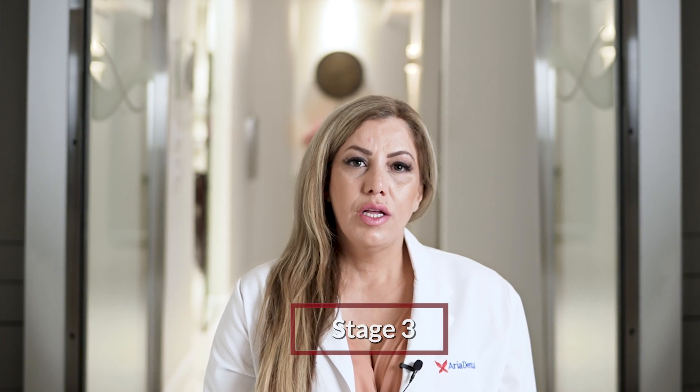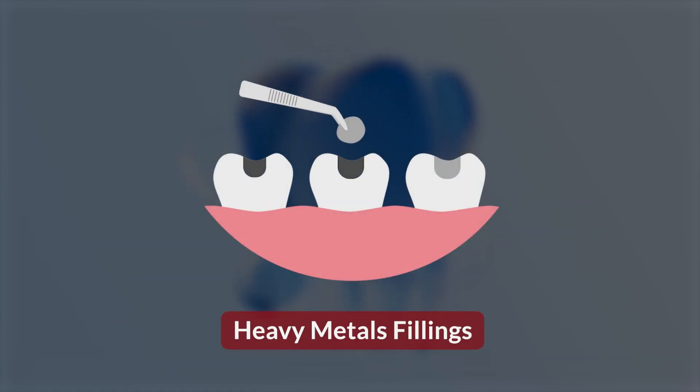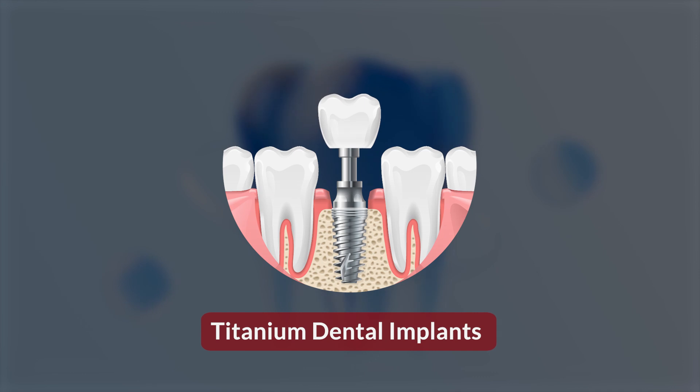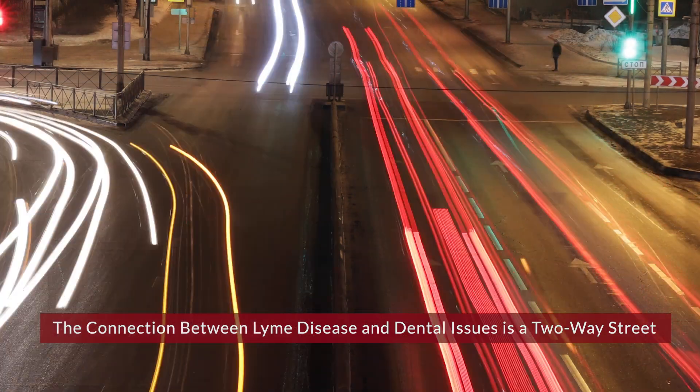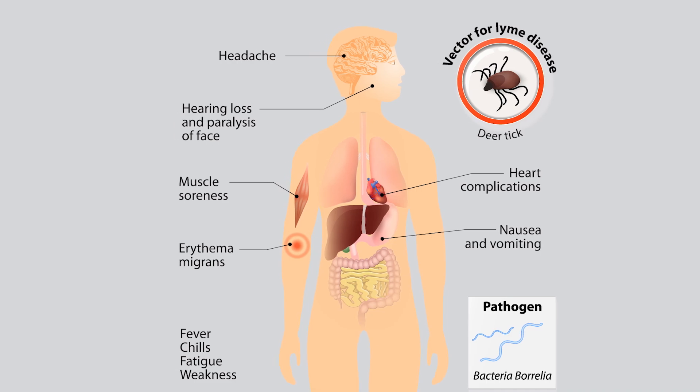Stage 3 Lyme disease doesn't occur for months or even years later. In that stage, called late Lyme arthritis, chronic jaw bone and facial pain and TMJ complications manifest significantly and chronically. In Stage 3, existing oral toxicity like dead root canal teeth, heavy metals like amalgam or mercury fillings, and titanium dental implants and metal crowns play a key role in healing and recovering from chronic Lyme disease. The connection between Lyme disease and dental issues is a two-way street, as spirochete bacteria in chronic periodontitis or gum disease also cause systemic inflammation that can worsen Lyme disease infections.